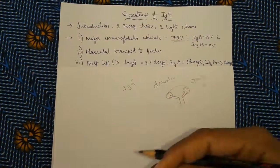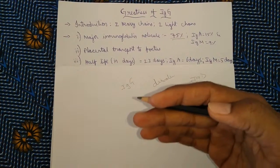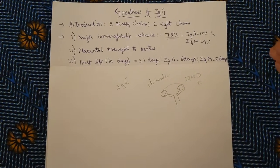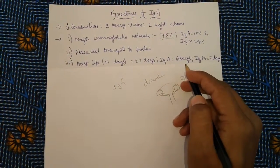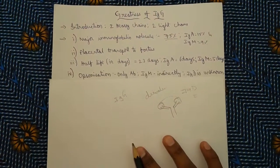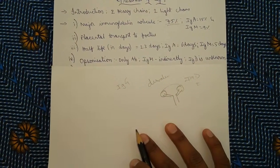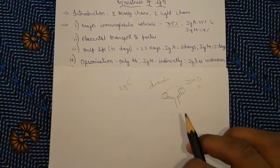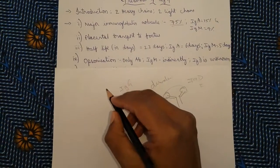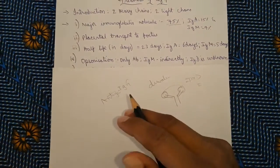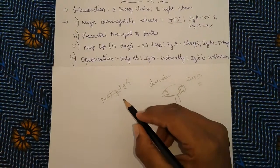Whereas IgA has only six days and IgM has five days. The fourth property is opsonization. What is opsonization? Opsonization is the process where the molecules called opsonins get attached to the antigens. As the opsonins attach to the antigens, the antigens start getting neutralized or getting killed.